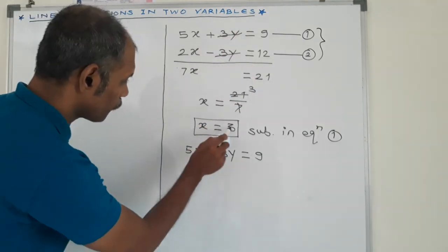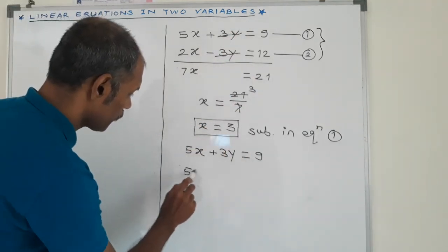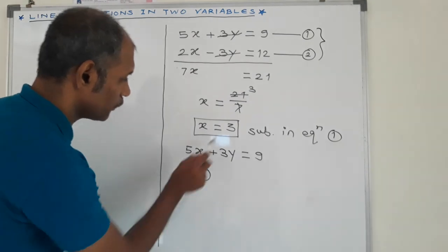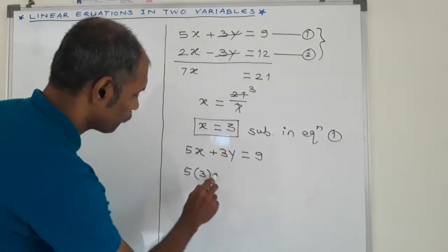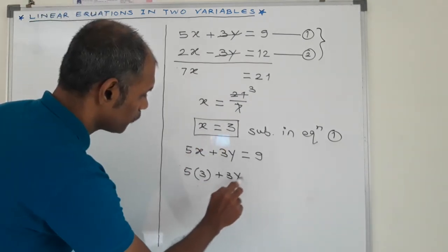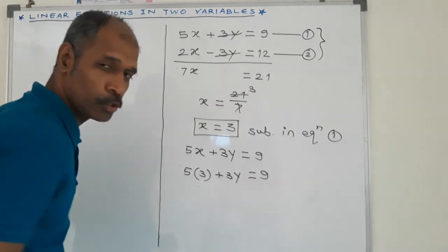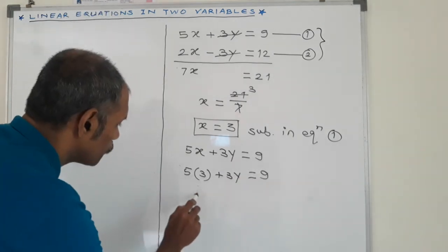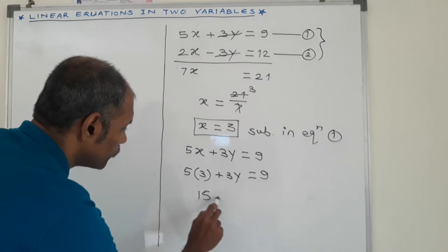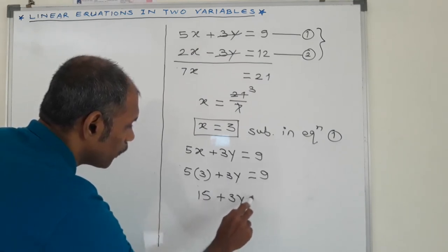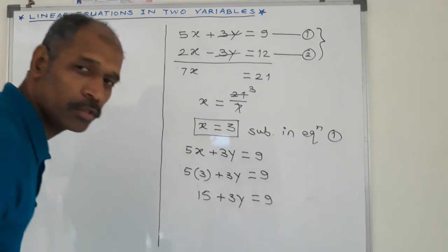We put the value of x. 5 in bracket, 3, the value of x, plus 3y is equal to 9. Then, 5 into 3 is 15, plus 3y is equal to 9.